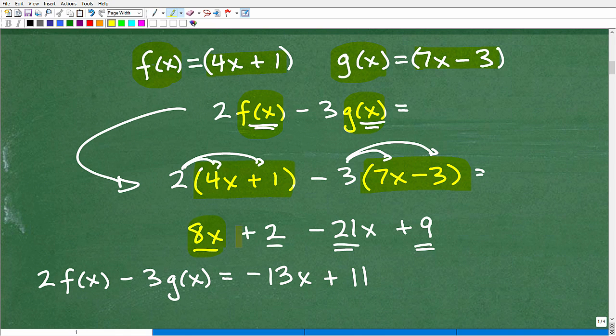So I'm going to add like terms. 8x and negative 21x will give me a negative 13x. And then 2 and 9 is 11. Okay. So now we can just simply write 2 times f of x minus 3 times g of x is equal to negative 13x plus 11.